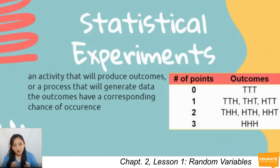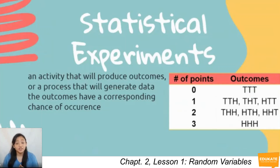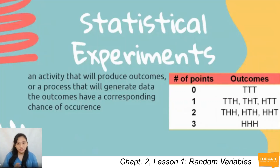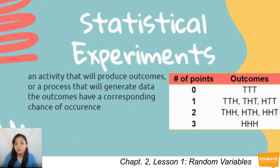In the first activity, the coin toss activity, all the possible answers are listed on the table as below. You have TTT, TTH, THT, HTT, THH, HTH, HHT, and finally HHH. They are divided according to the number of points based on the number of heads.